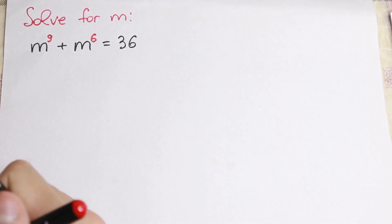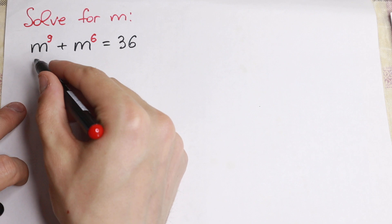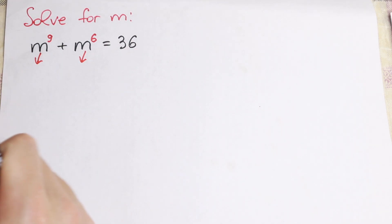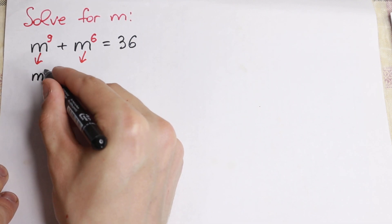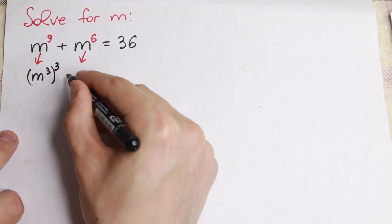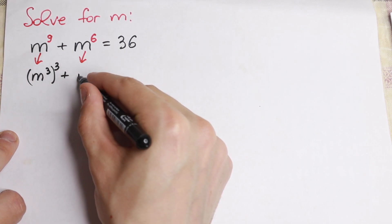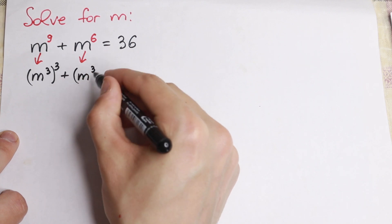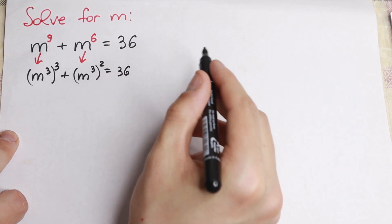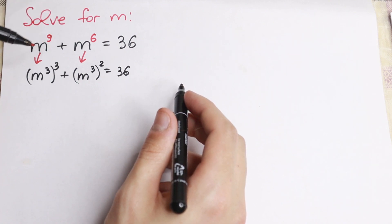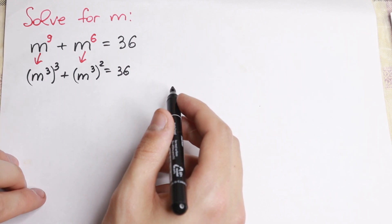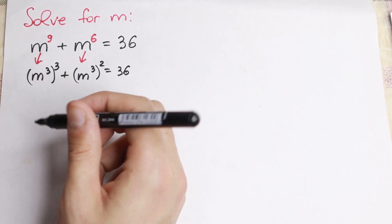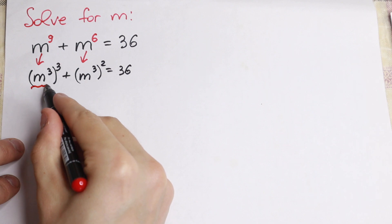First of all, I see that 9 and 6 are really good powers, because we can write m to the ninth power and m to the sixth power in a different way. We can write m to the ninth power as m cubed to the third power, and m to the sixth power as m cubed to the second power, equal to 36. We just write the 9 and 6 powers in another way — if we multiply the powers we get the same expression, nothing changed. Right now I see m cubed here and m cubed here as well.